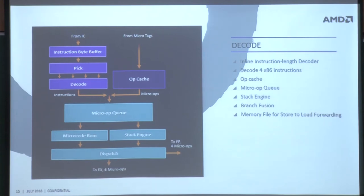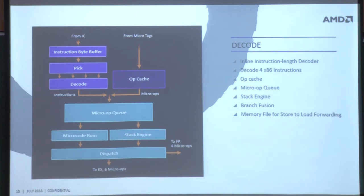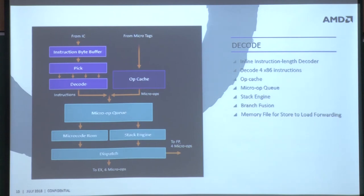Another feature is branch fusion. A lot of the time you have a compare instruction followed immediately by a branch instruction — you compare and then branch based on the compare result. Instead of executing these two instructions separately, the decode engine can dynamically fuse them together as a single instruction. From that point onward it's just a single op, needing only one scheduler queue entry and one execution slot. So two simple ops are fused by hardware into one fused op.